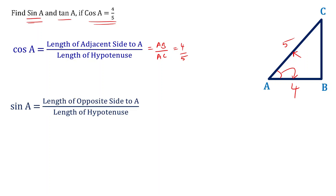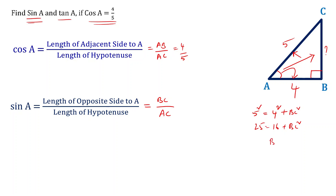Sin A is defined as the length of the opposite side to angle A divided by the length of the hypotenuse. The opposite side to angle A is BC, and the hypotenuse is AC, so sin A equals BC by AC. Since BC is unknown, we use the Pythagoras theorem: AC squared equals AB squared plus BC squared, so 5 squared equals 4 squared plus BC squared. That gives 25 equals 16 plus BC squared, so BC squared equals 9 and BC equals 3.